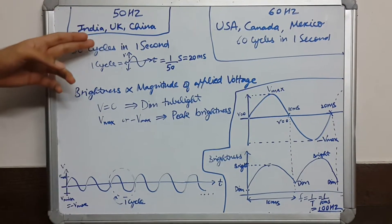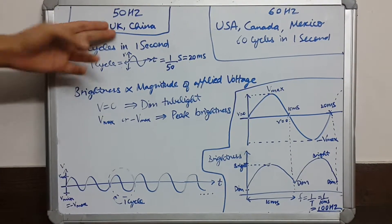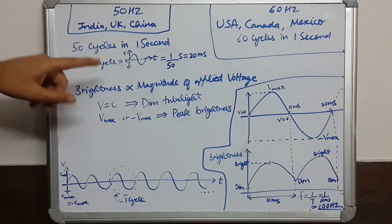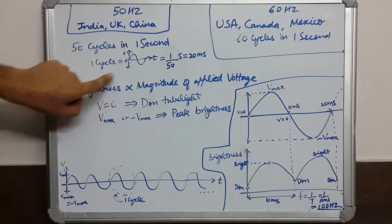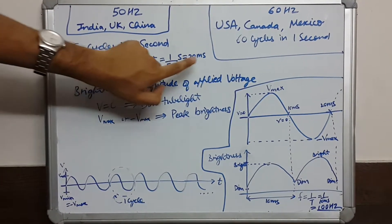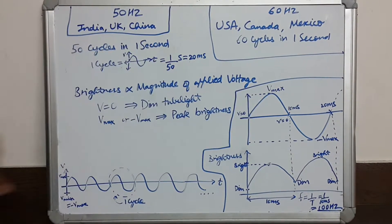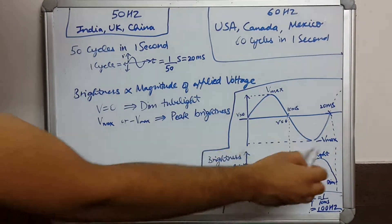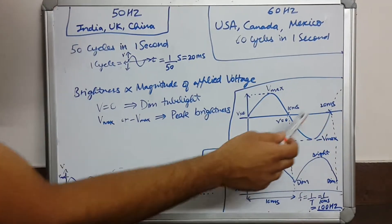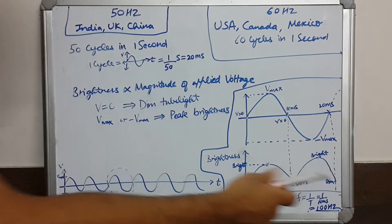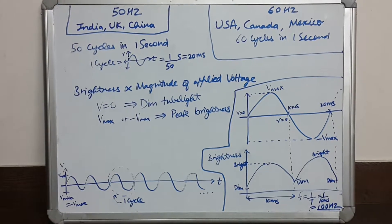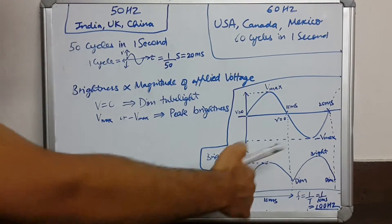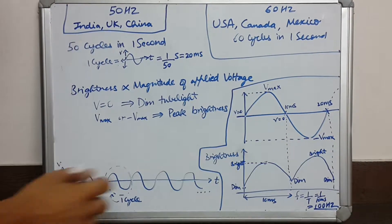In India, UK, and China where we have 50 Hz, we have 50 cycles in one second, so one cycle is 20 milliseconds. In one cycle of voltage we get two cycles of the light going from dim to bright — that is, two cycles of brightness.